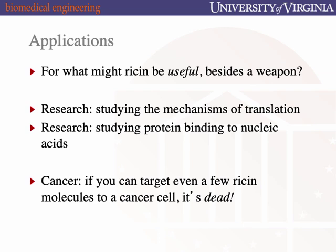Ricin has also been used therapeutically. Envision ricin A — instead of being conjugated to ricin B — conjugated to an antibody whose antigen is a cell surface epitope on a cancer cell. One could administer very small amounts of that ricin targeted specifically to cells with high levels of that antigen on their surface. This notion of antibody-conjugated immunotoxins — ricin and other examples — has FDA-approved examples in cancer therapy.